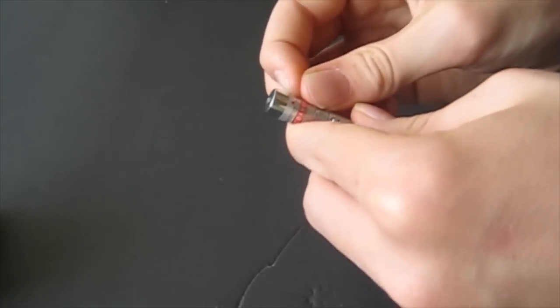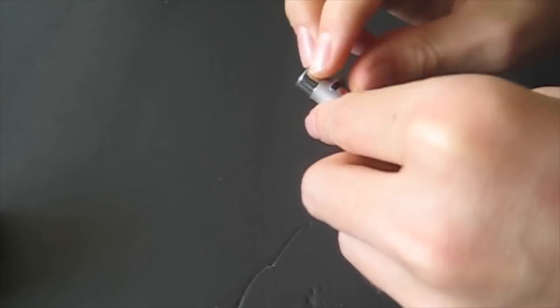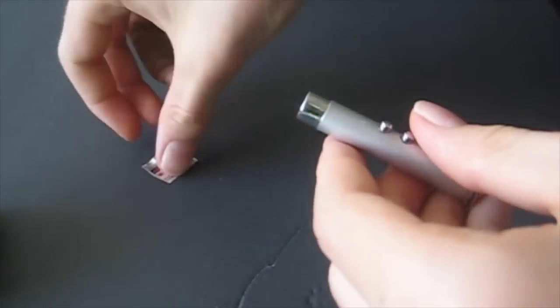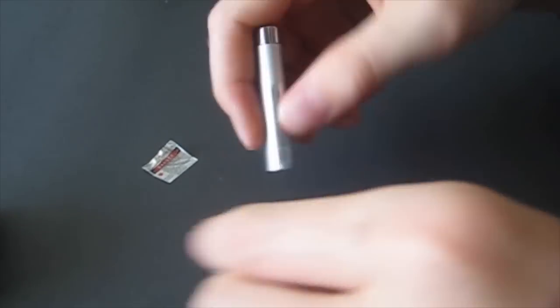So the first step is to take off the sticker. This will let you get the end cap off. Now unscrew the bottom and remove the batteries.